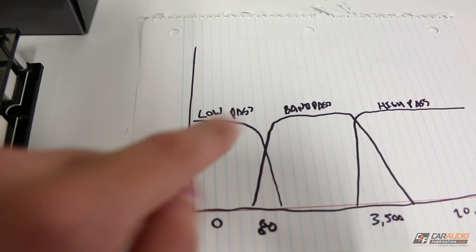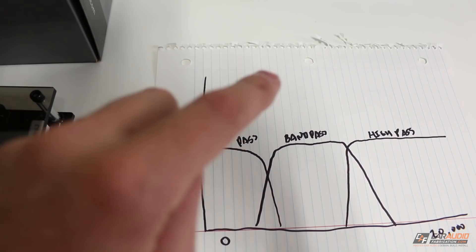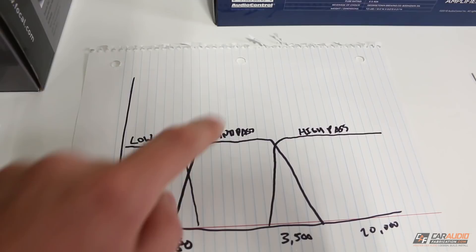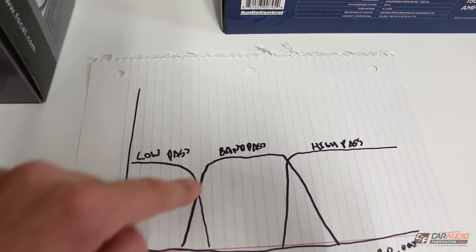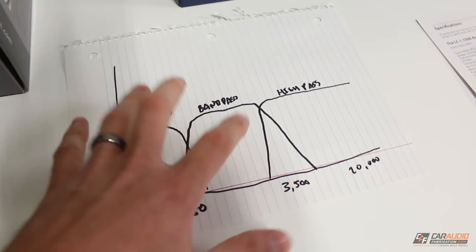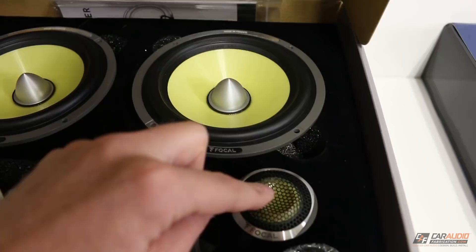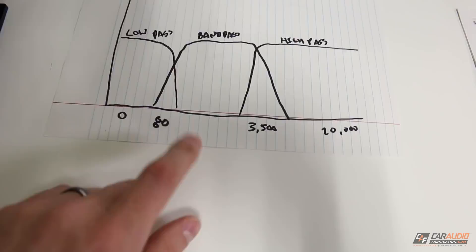A low pass crossover is something you would use for a subwoofer. It would have a value — something like 80 Hertz — meaning it's going to allow anything below 80 Hz to pass through. Next up is a band pass crossover. This is basically a combination of a low pass and a high pass crossover, where it only allows frequencies between a certain range. This type of crossover would be used for something like a mid range speaker — you don't want subwoofer bass going to it, and you don't want the high notes going into it. So you limit it to a certain range: band pass.